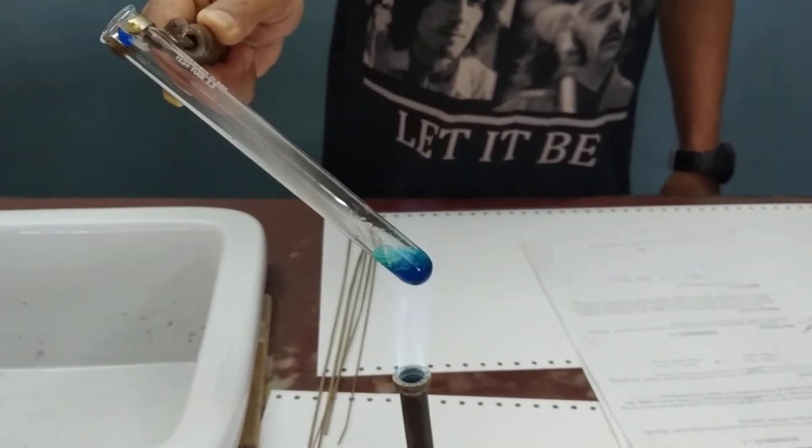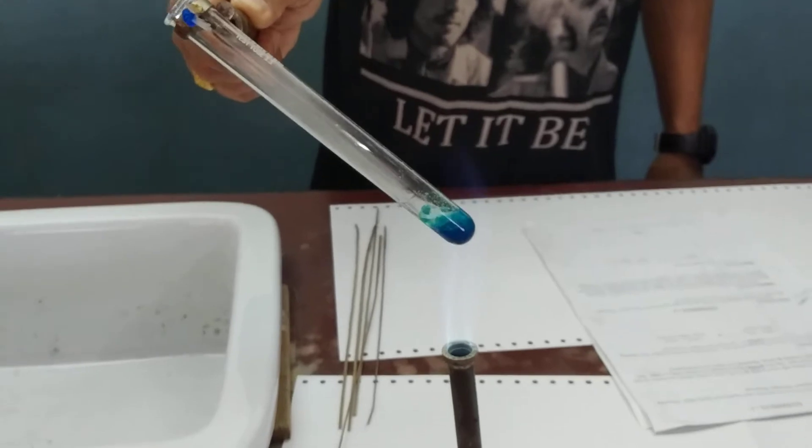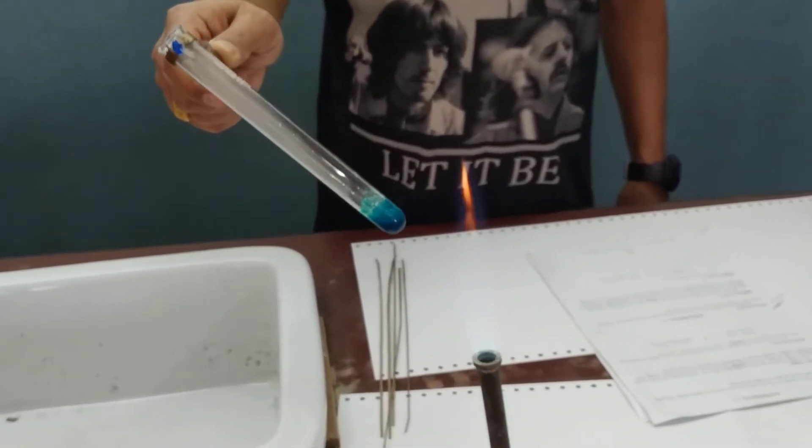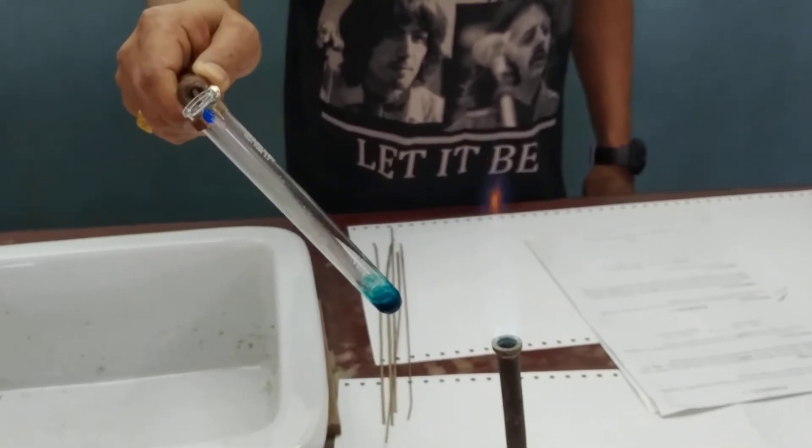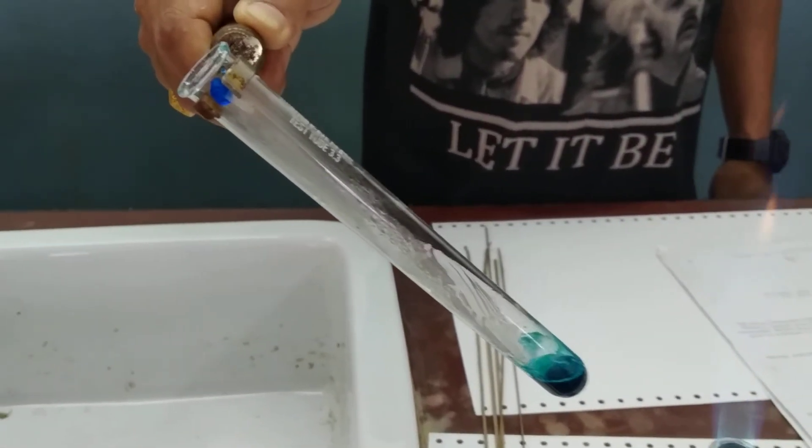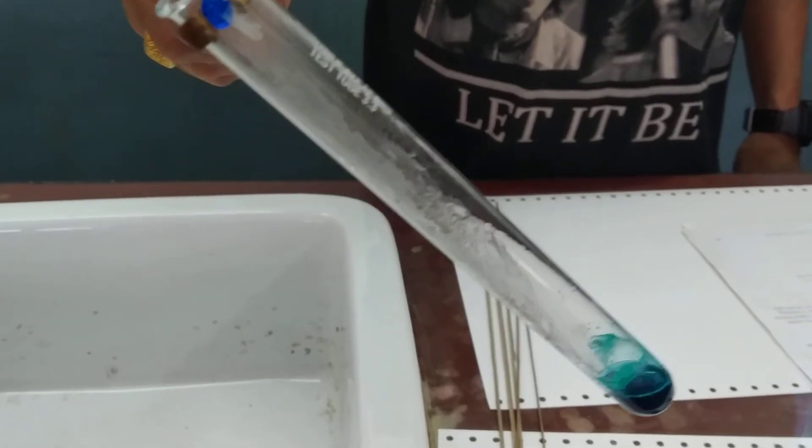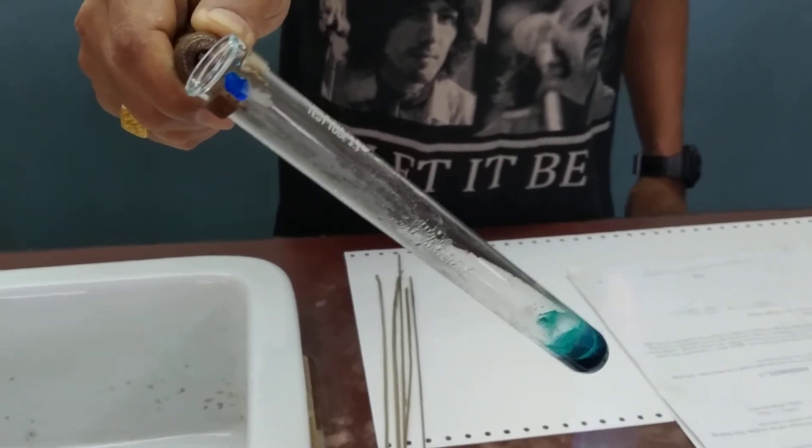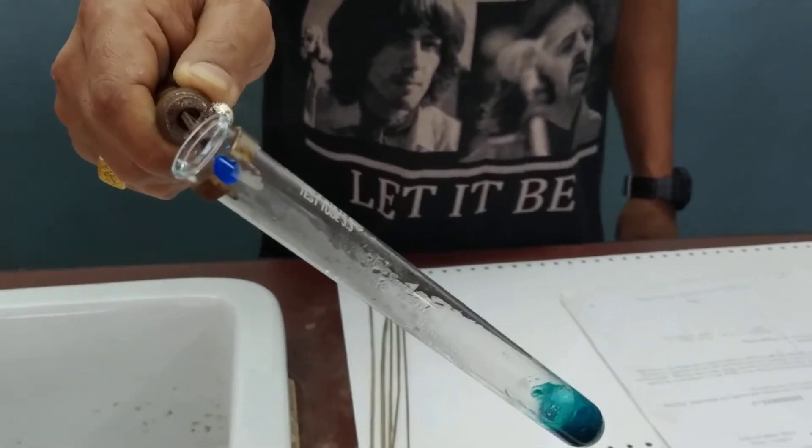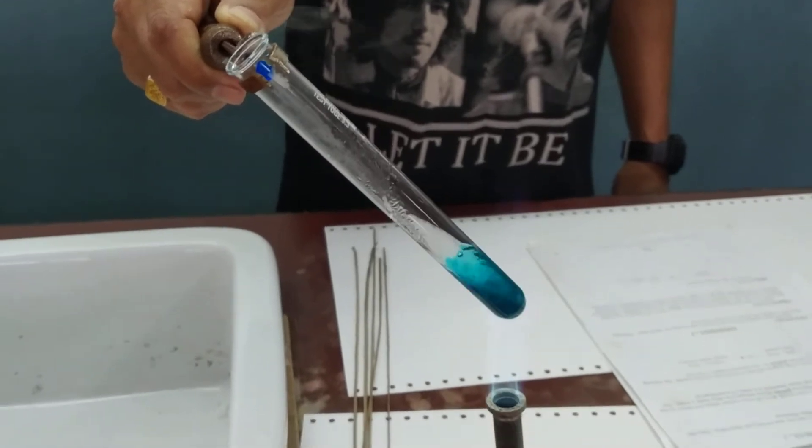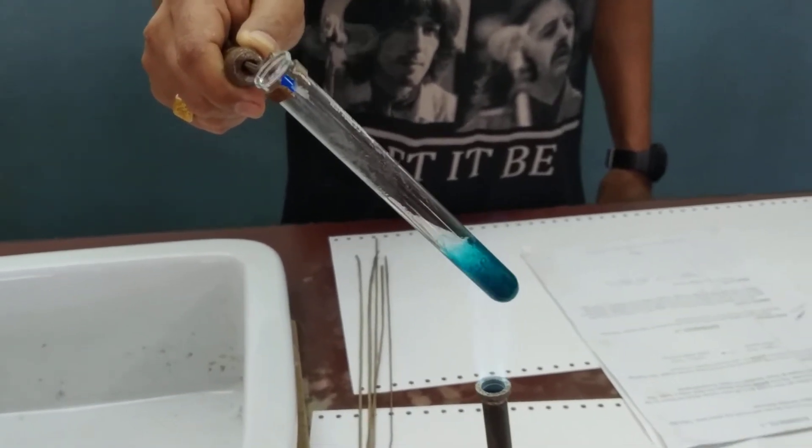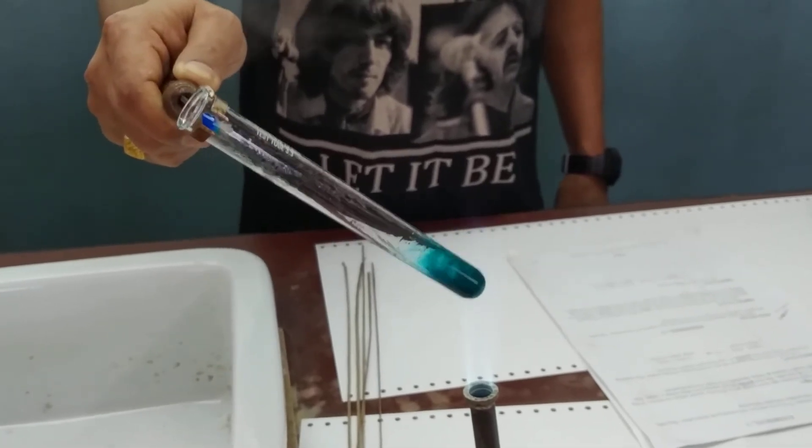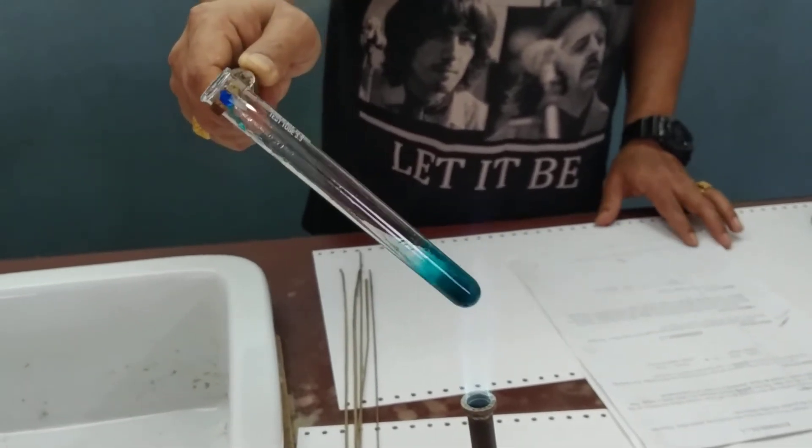We observe that the blue crystalline solid has melted and is releasing water of crystallization. You can see water droplets in the cooler parts of the test tube. If we heat it excessively, vapor comes out of the test tube. These droplets are water of crystallization.